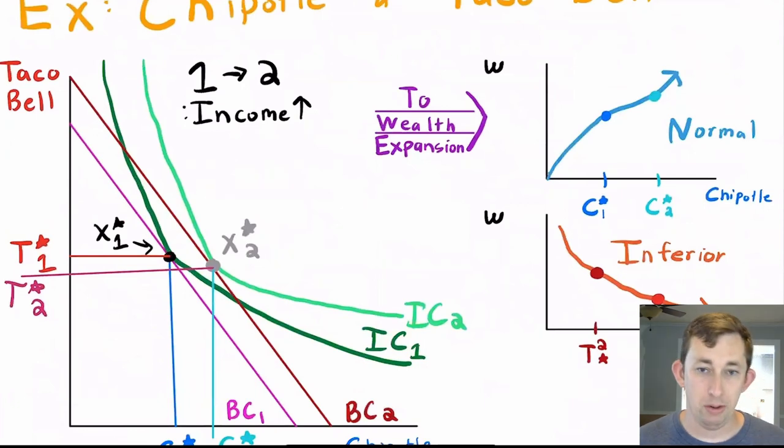And what I've got is a couple of graphs. So let's go ahead and go over those. In this corner, we once again have our graphical representation of a utility maximization problem, where the only difference between subscripts one and subscripts two is that my income has gone up from one to two.